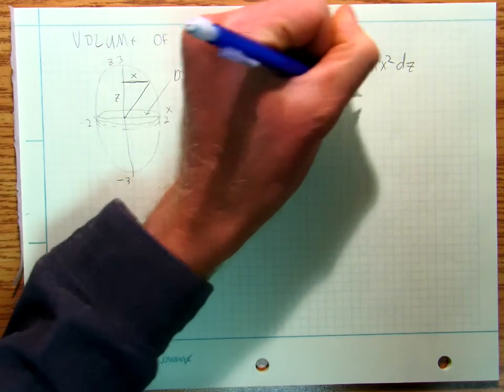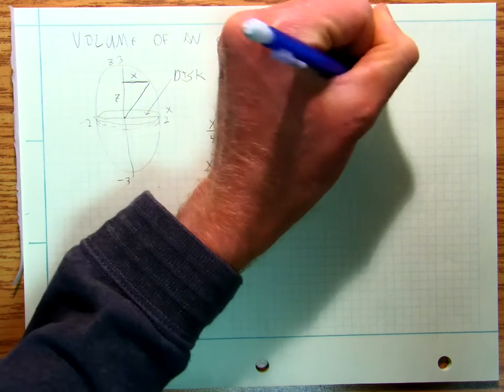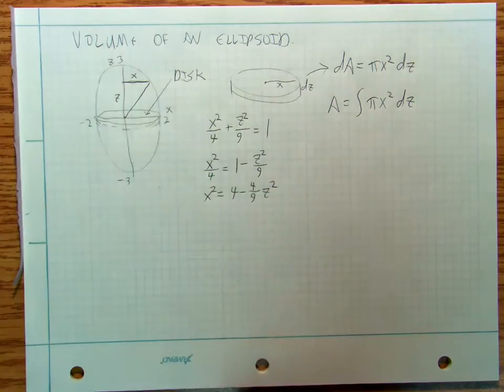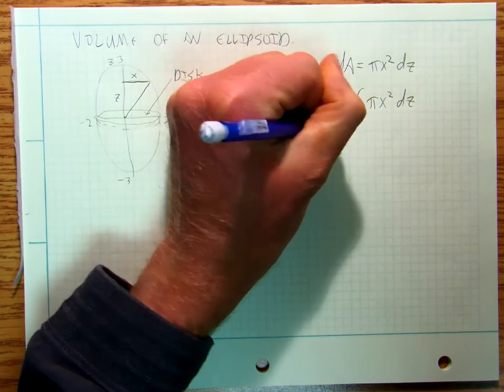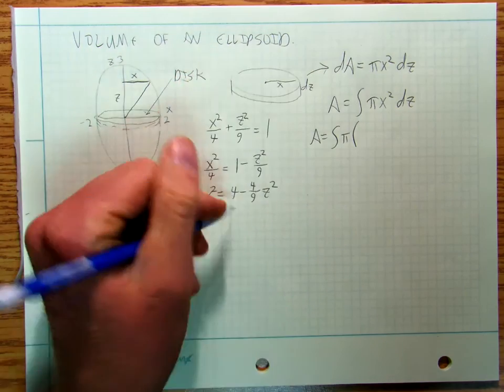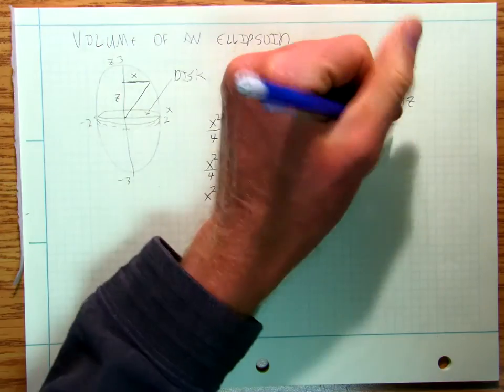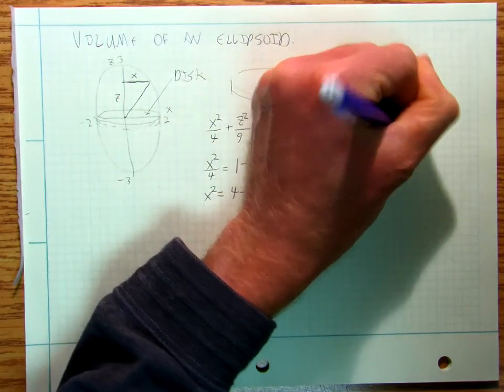My A is going to be equal to the integral of pi x squared dz. And my x squared is going to be 4 minus 4 ninths z squared.